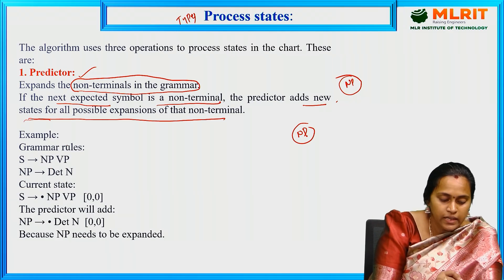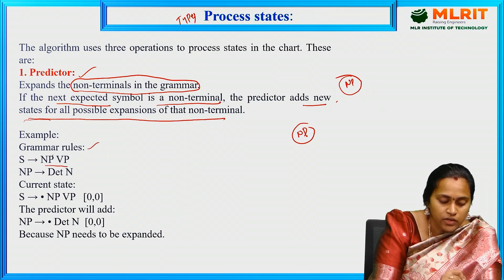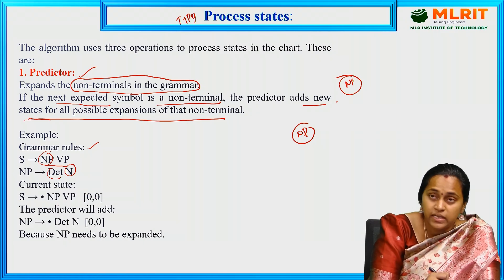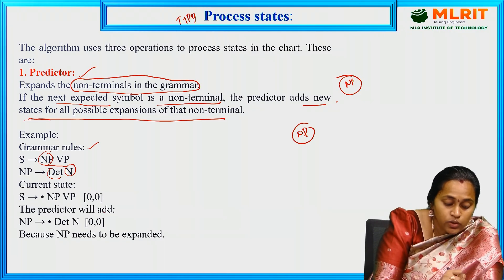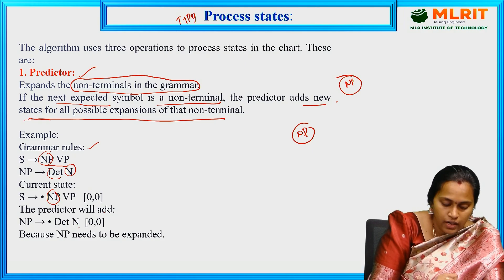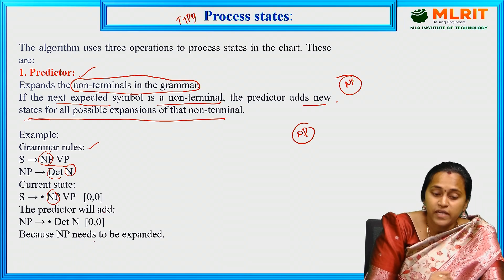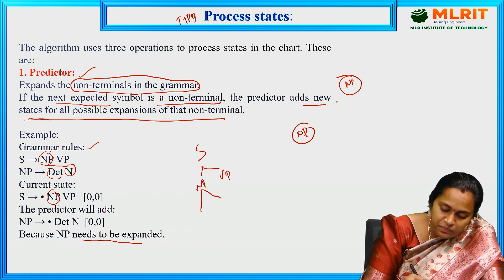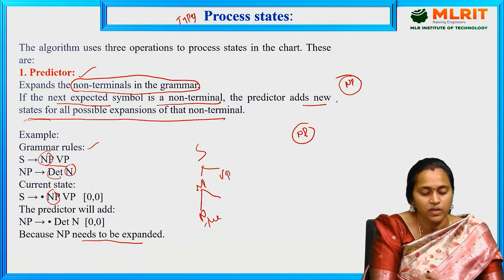For example, with grammar rules: a sentence contains noun phrase and verb phrase, and noun phrase contains determiner and noun. The current state has i=0, j=0. The Predictor will add the noun phrase rule: NP → determiner noun, at position (0,0), because NP needs to be expanded. When a structure contains a noun phrase, it needs to expand the noun phrase into a determiner. This is the meaning of the Predictor.